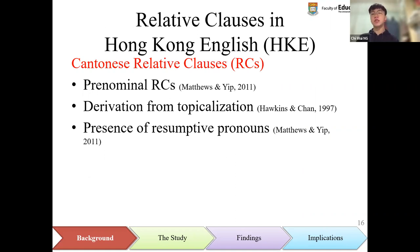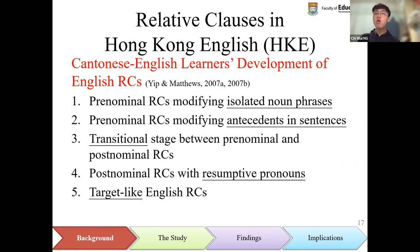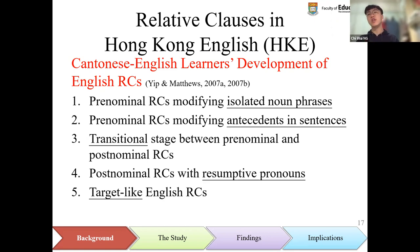Cantonese learners' development of English relative clauses is influenced by Cantonese relative clauses, which are typologically different from English relative clauses by being pre-nominal, derived from topicalization, and containing resumptive pronouns. From a bilingual perspective, on the basis of data in the Hong Kong bilingual child language corpus, Yip and Matthews summarized five stages of Cantonese learners' development of English relative clauses. Learners first produce pre-nominal relative clauses, and subsequently achieve a transitional stage between pre-nominal and post-nominal relative clauses, until they can eventually produce target-like post-nominal relative clauses without resumptive pronouns.